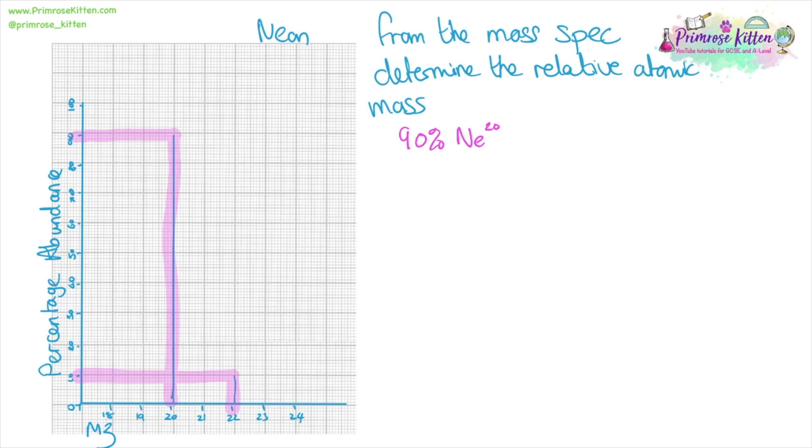So 90% of the atoms in the sample had a mass of 20 and 10% of the atoms within the sample had a mass of 22. Now we have this data from the graph we can read it exactly the same way and do all of this over 100. So 90 times 20 plus 10 times 22 over 100 will give us a relative atomic mass of 20.2.